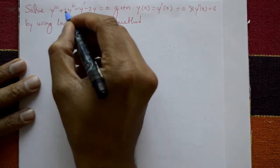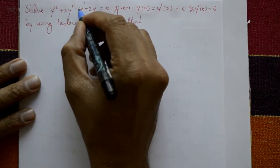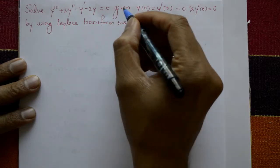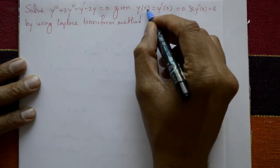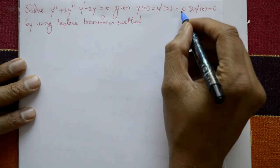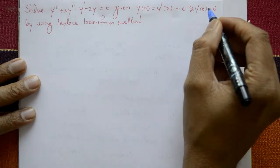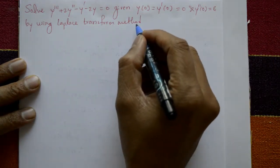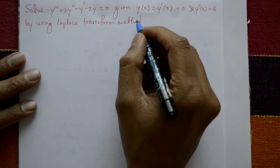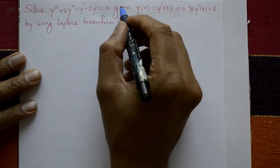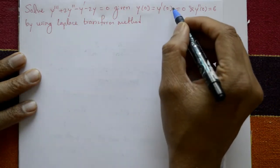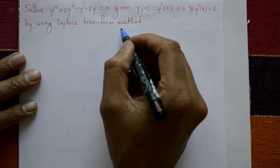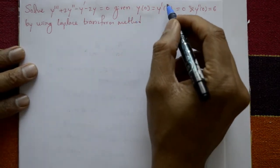Solve y''' + 2y'' - y' - 2y = 0, given y(0) = 0, y'(0) = 0, and y''(0) = 6, using the Laplace transform method. Now, given these initial conditions, we apply the Laplace transform.